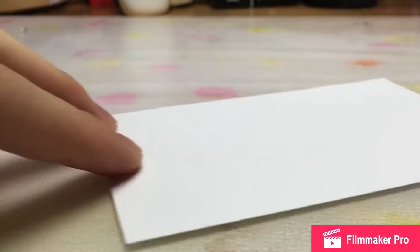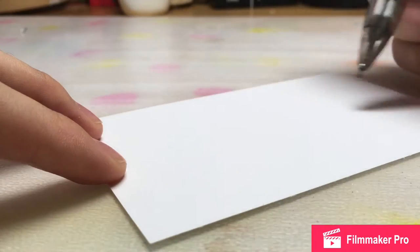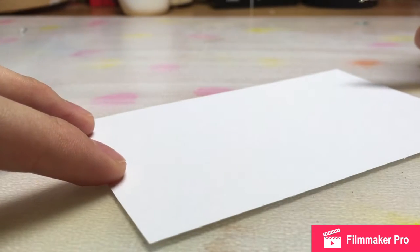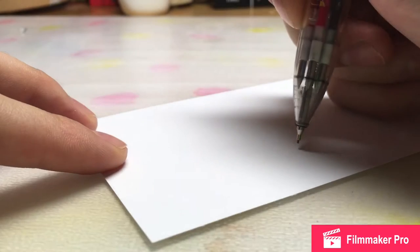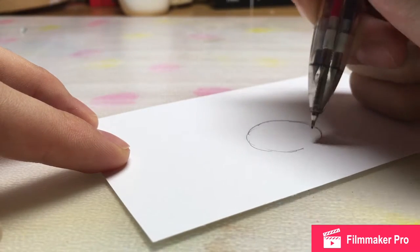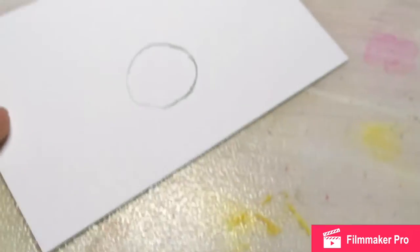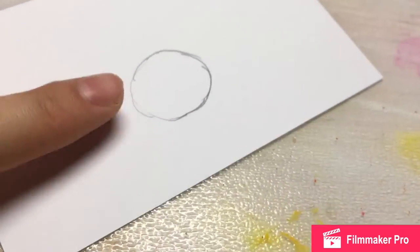Now I'm going to first draw a circle. I think you guys can just draw a little thing like this. It's not like a perfect circle but you can see it's a bit messy, but that's fine.